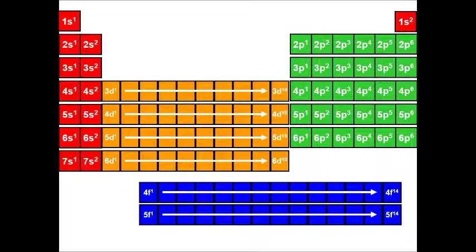Notice that the s orbitals are filled in the outer shells of the elements in columns one and two. So groups one, the alkali metals, and groups two, the alkaline earth metals.